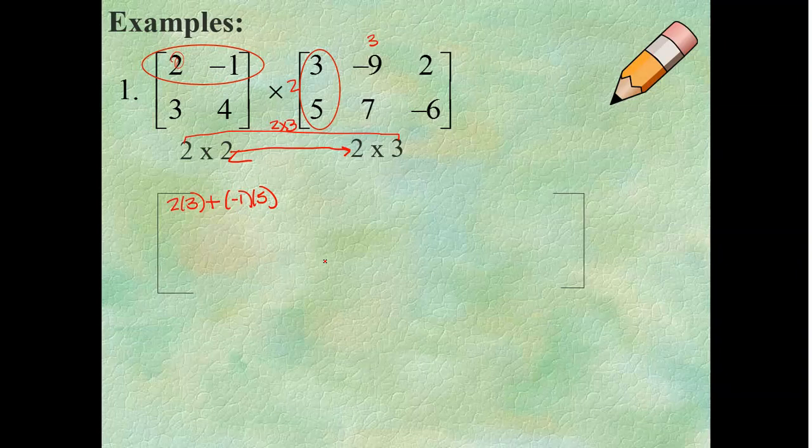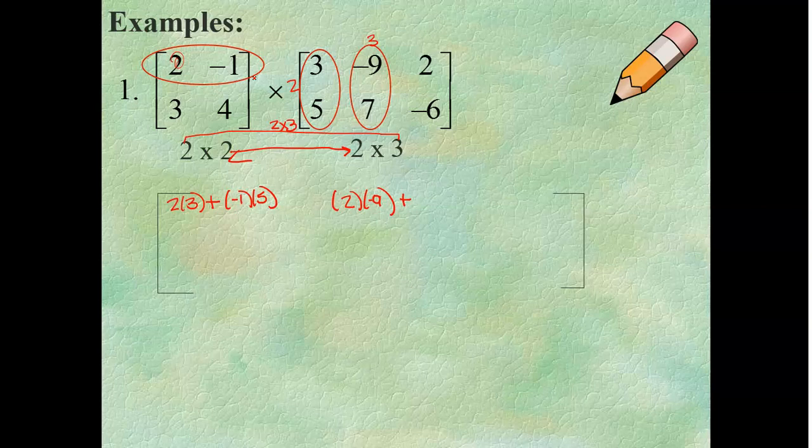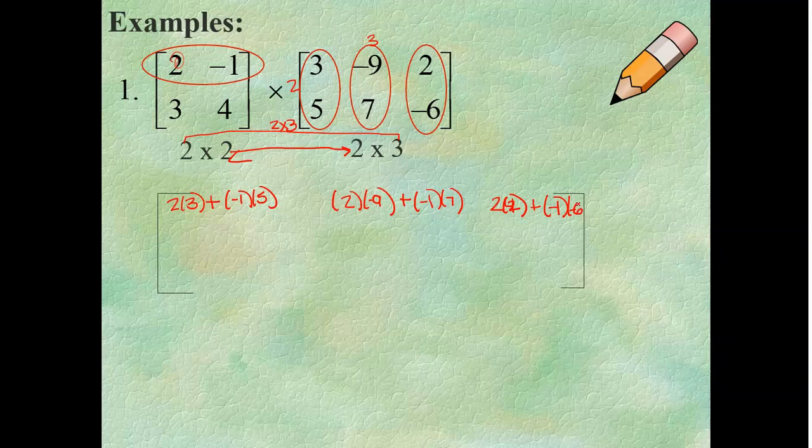Continue. So, I've got to take the first row times the second column now. So, that's going to be 2 times negative 9 and add negative 1 times 7. Alright. Second column is done. Now, I need first row times third column. So, 2 times 2 is 4. Write that out. And then plus negative 1 times negative 6.